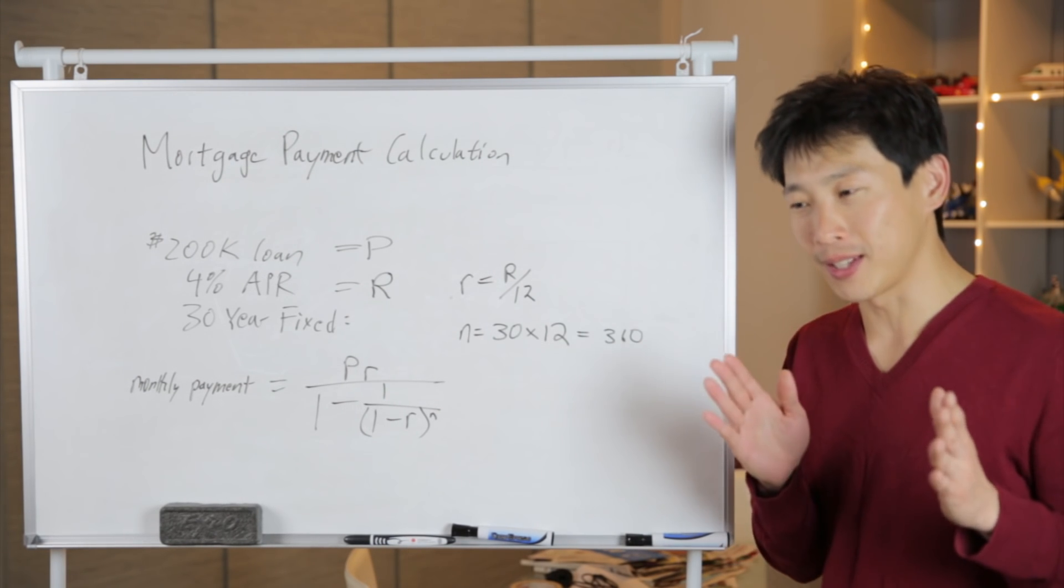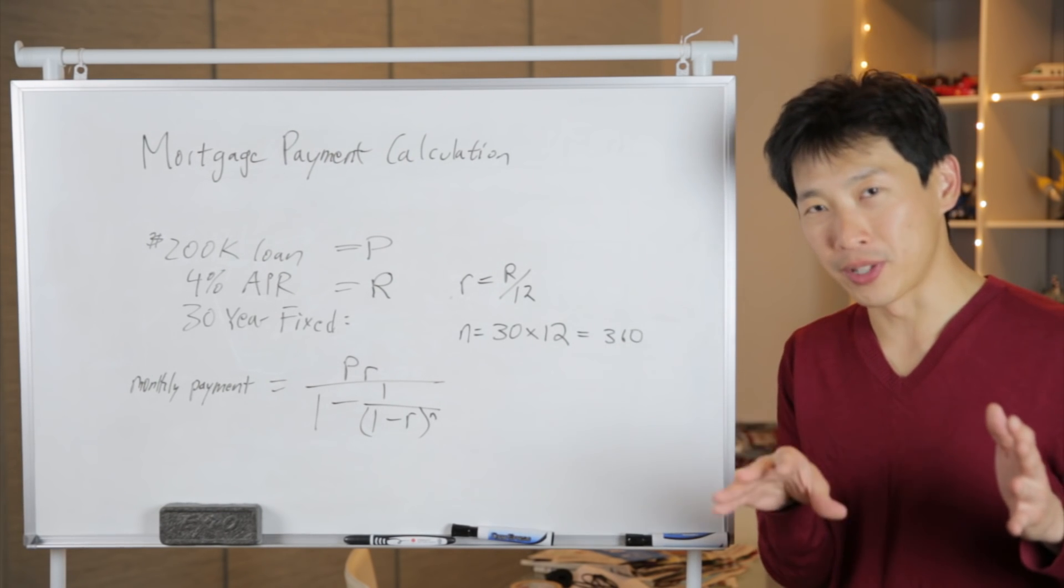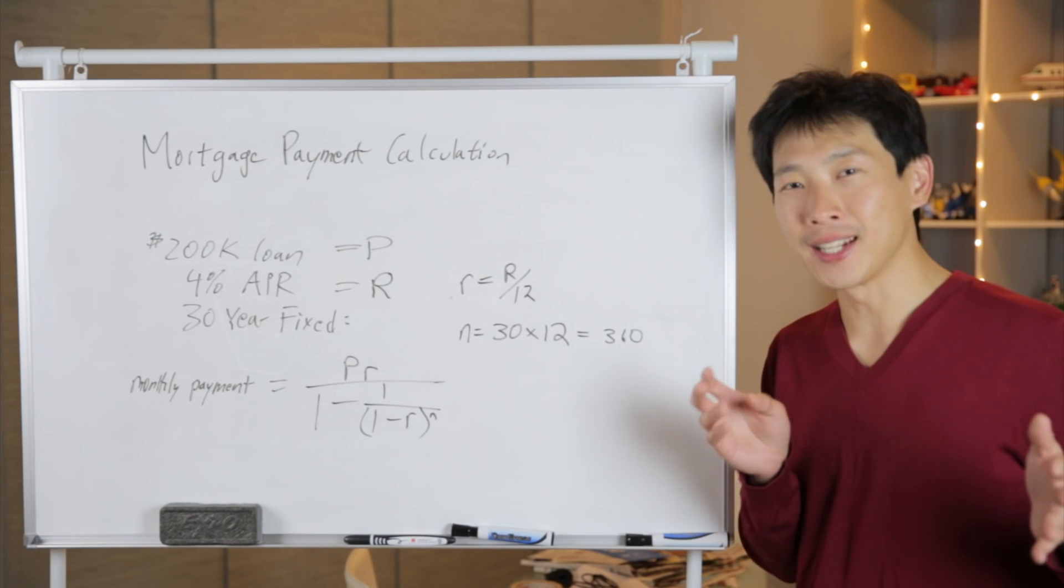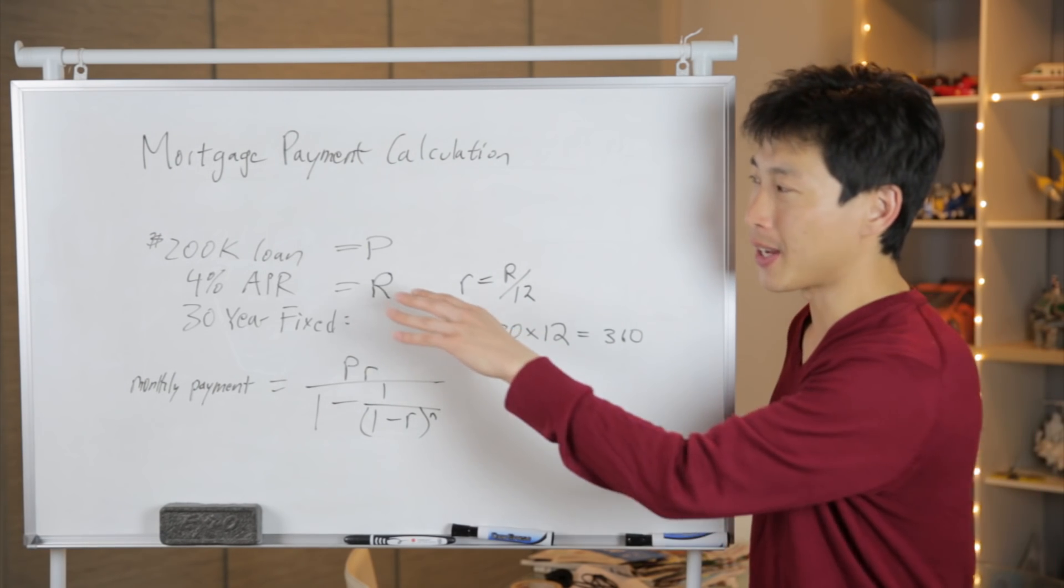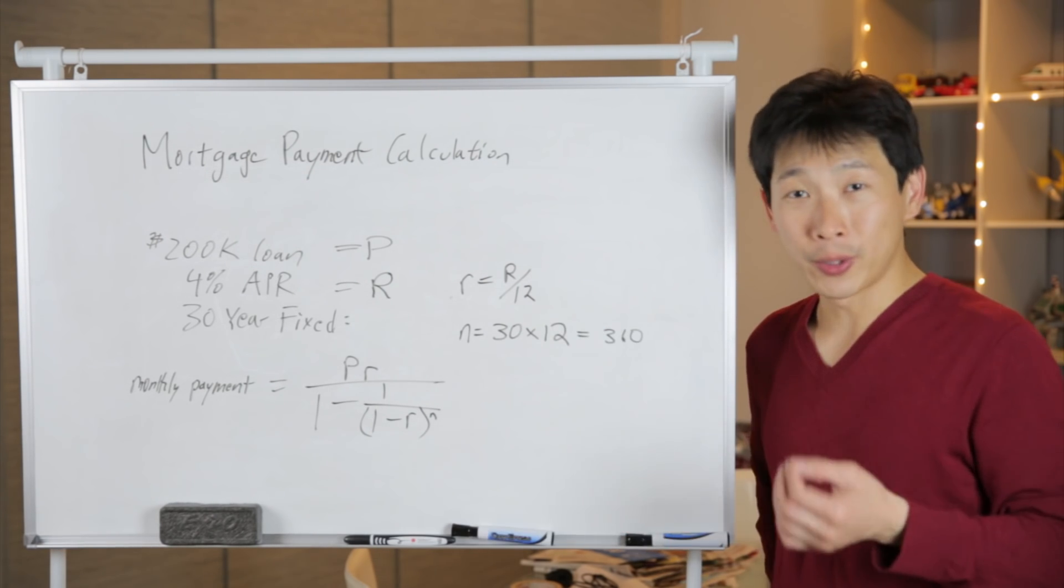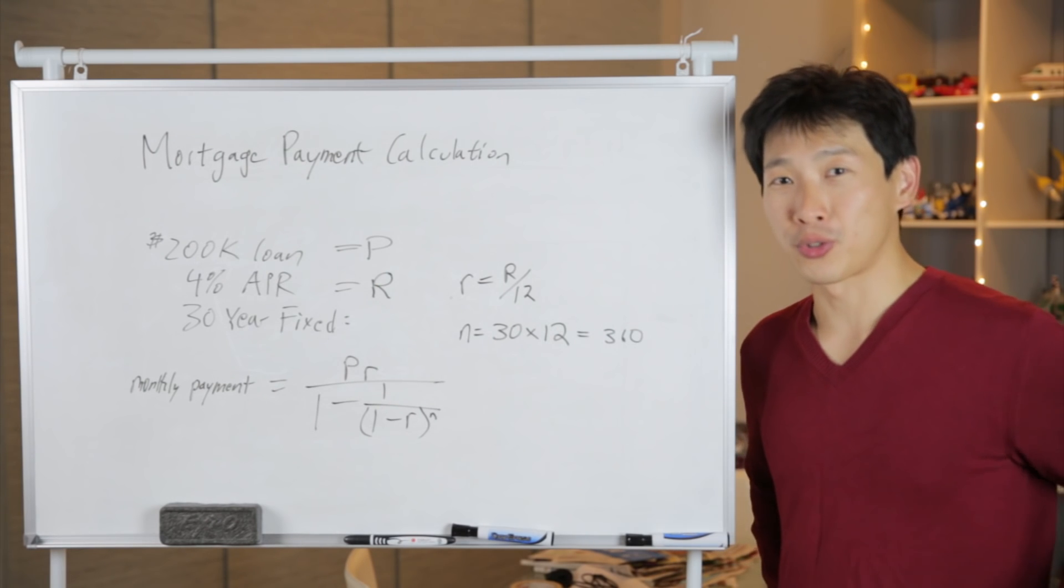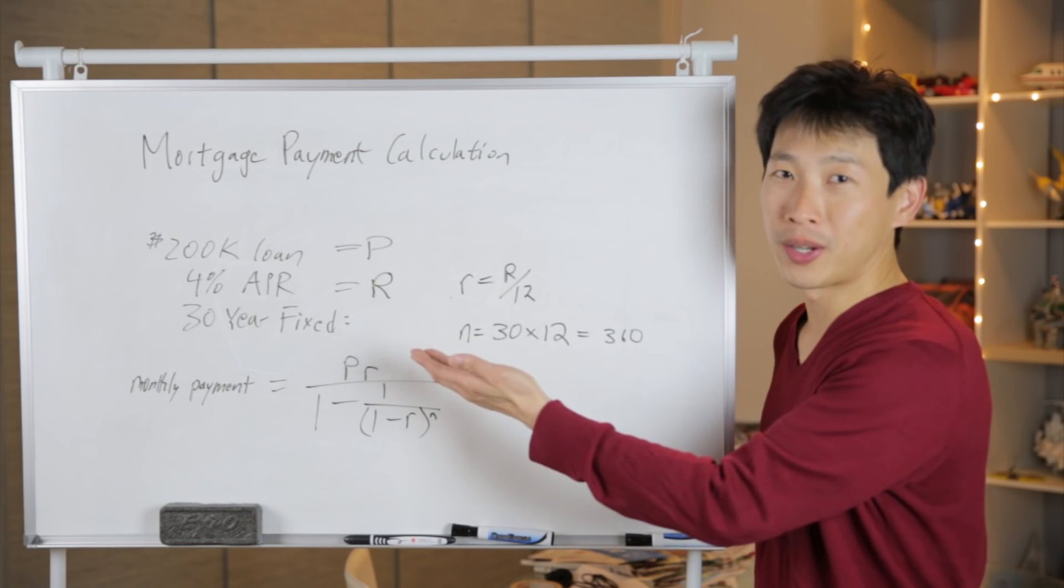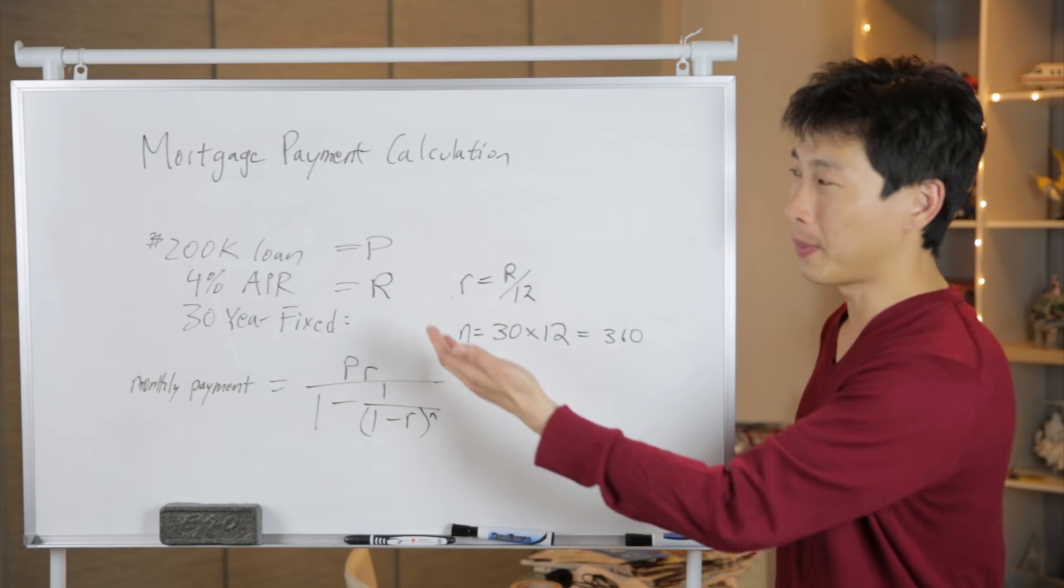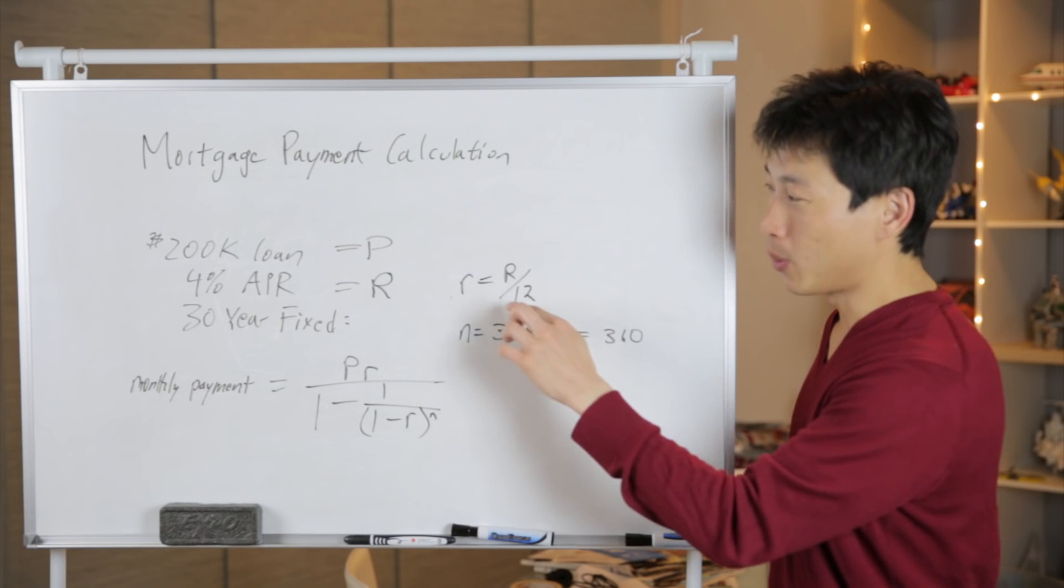So once you borrow the loan, they calculate how much interest you earn one month later and then they add it to your principal. Then they take out your payment which includes the interest and a little bit of the principal. The thing to keep in mind here is that 4% APR is 4% over one year. In order to get the monthly interest that you have to pay, you divide that by 12 because there's 12 months in a year. Otherwise you don't want to pay 4% every single month, right? So if you have $200,000 you don't want to pay $8,000 every single month in terms of interest. So you divide this down by 12.